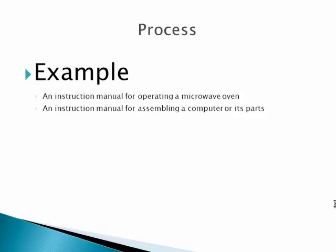As an example of other processes, consider an instruction manual for assembling a computer or its parts. Usually, with every product, there is a user manual that represents how to use the product and how to assemble it. These are a few examples of processes.